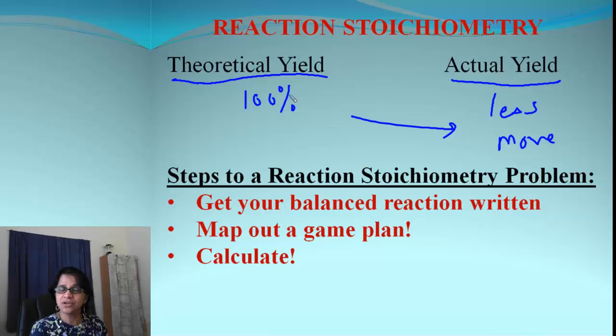Now, how do you find out the theoretical yield? For that, we use stoichiometry and these are the steps. We first write the balanced reaction and look at that. It says there, map out a game plan. We'll talk about that in a minute. And then, of course, it's simple calculation. So let's move on to our first problem.